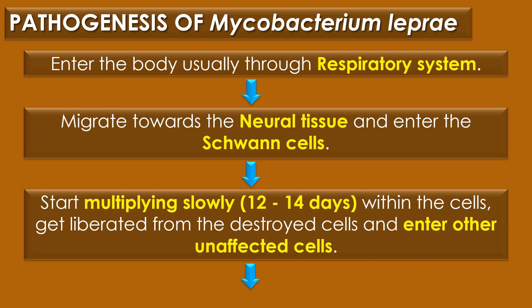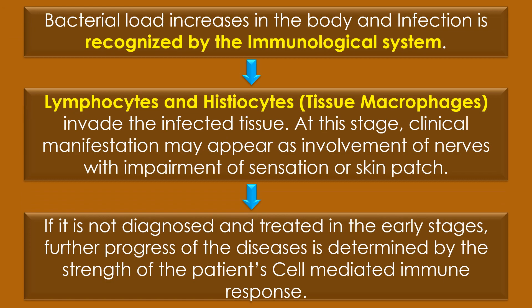The bacteria get liberated from destroyed cells and enter into other unaffected cells. Till this stage, a person remains free from signs and symptoms of leprosy. As Mycobacterium leprae multiply, bacterial load increases and infection is recognized by the immunological system. Lymphocytes and histocytes or tissue macrophages invade the infected tissues. At this stage, clinical manifestation may appear as involvement of nerves with impairment of sensation or skin patch.